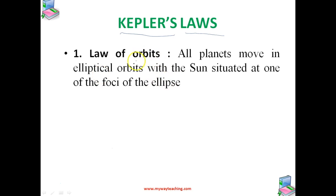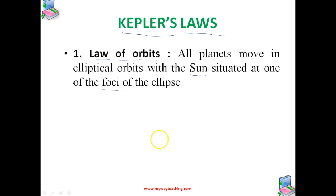The first law is called the Law of Orbits. This law states that all the planets move in elliptical orbits with the sun situated at one of the foci of the ellipse. This means it is a heliocentric theory — the sun is at the center and all the planets revolve around the sun in an elliptical orbit. The planets do not move in circular motion; instead, they move in an elliptical orbit.